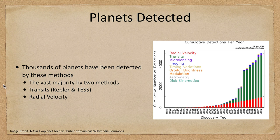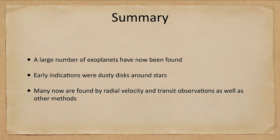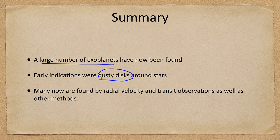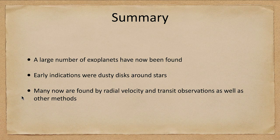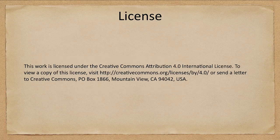To summarize: we have found a large number of exoplanets — thousands now confirmed. Our early indications came from dusty disks around stars, which hinted that material and planets were out there. Now we have found them directly. Many are found by radial velocity and transit observations, as well as a few other methods. That concludes this lecture on evidence for exoplanets. We'll be back next time for another topic in astronomy — have a great day everyone, and I will see you in class.